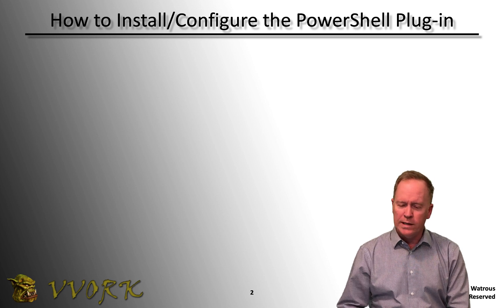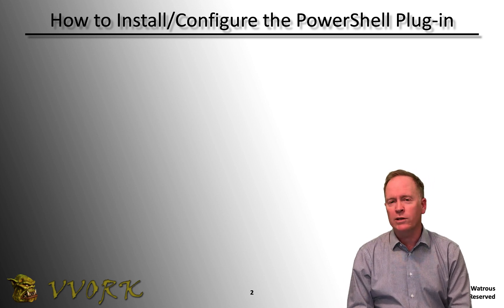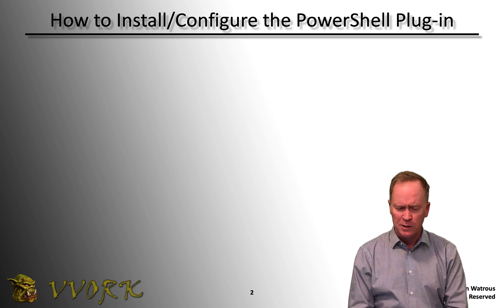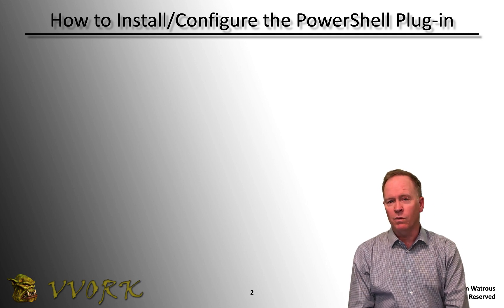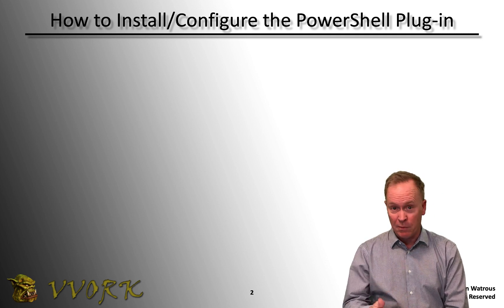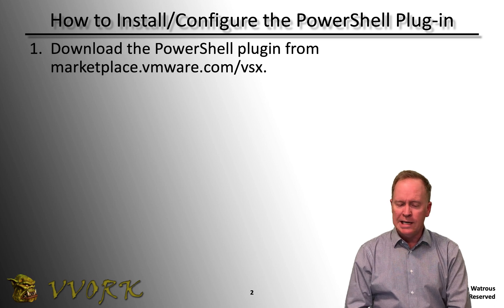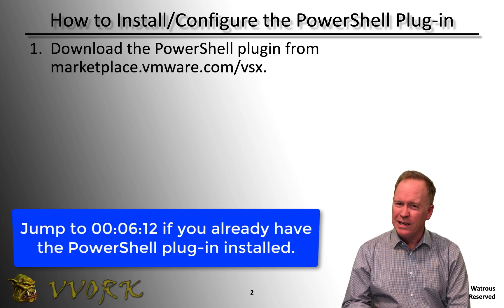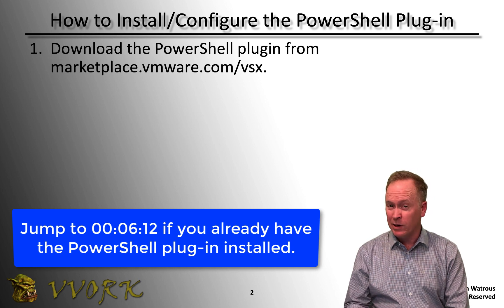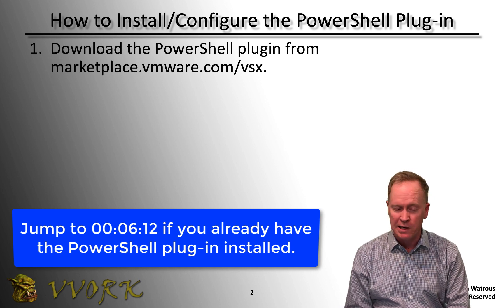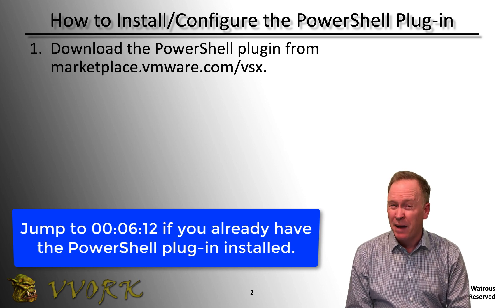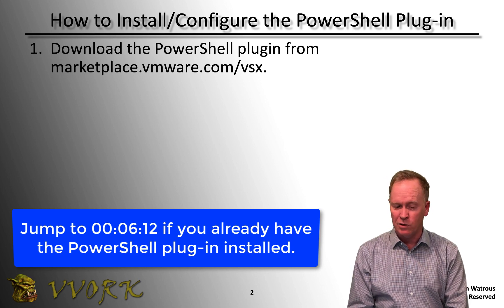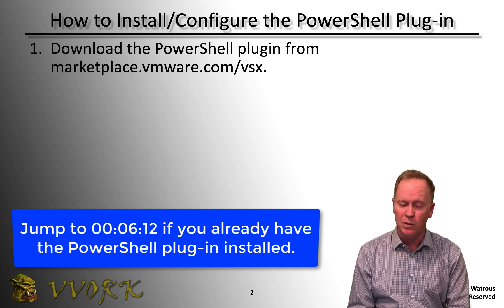If you haven't seen the previous video, you'll probably want to take a look at that because it talks about what this PowerShell plugin is and what it does. If you want to be able to call PowerShell scripts from your Orchestrator workflows, you're going to need to configure a setup that looks like this. At least in the old days, you had to download the PowerShell plugin from the marketplace URL on screen — marketplace.viewer.com/vsx. The PowerShell plugin is now included in Orchestrator, so you may not need to do step one.